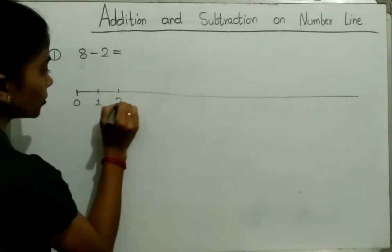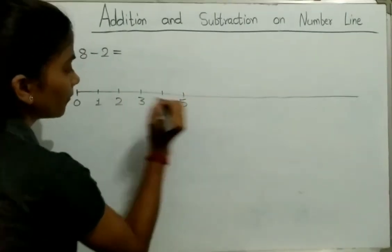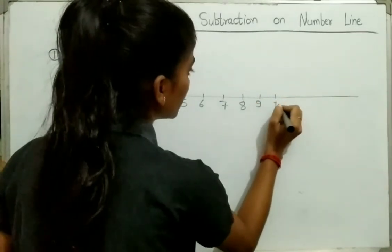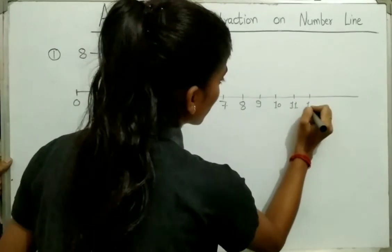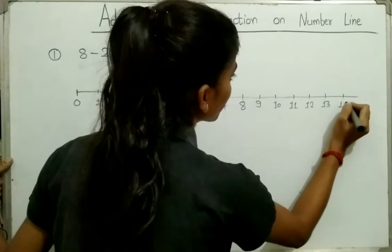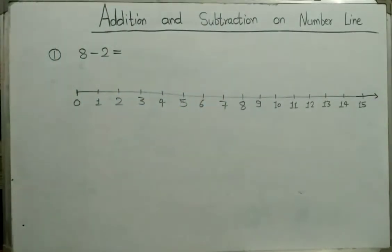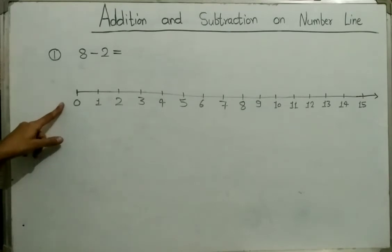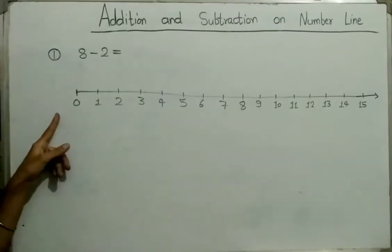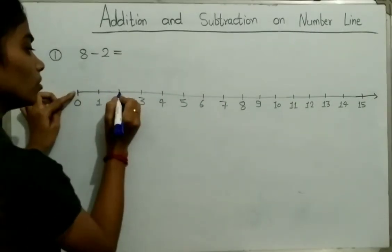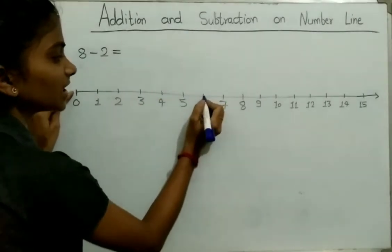1, 2, 3, 4, 5, 6, 7, 8, 9, 10, 11, 12, 13, 14, 15. Here we see the first number is 8. So first start from zero and we will jump 8 steps to the right: 1, 2, 3, 4, 5, 6, 7, 8.